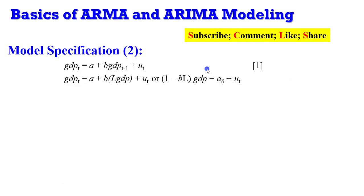Specifying an ARMA model: on the screen we can see GDP as our example. Looking at equation one, GDP is explained by its first lag — T minus one — plus an error term. Moving LGDP to the left-hand side and factorizing gives the equivalent equation. There is no other exogenous variable in this model; GDP in time T is explained entirely by its immediate past at T minus one and a white noise error term.